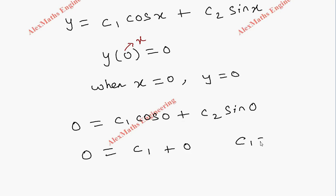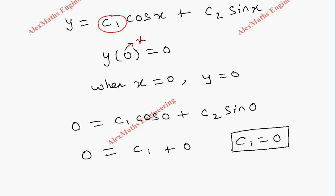From this, we come to know the value of c1 is 0. Now we replace this in the solution. Since c1 = 0, we don't have the first term at all. So y = c2·sin(x).